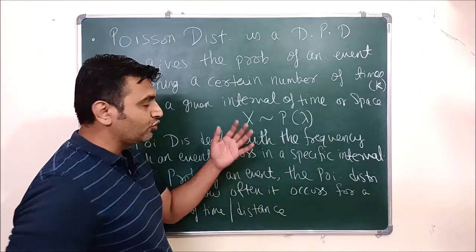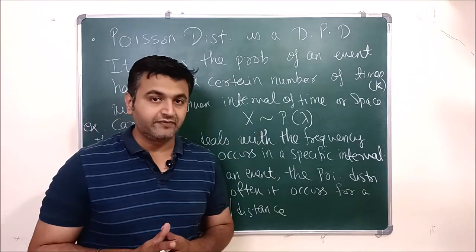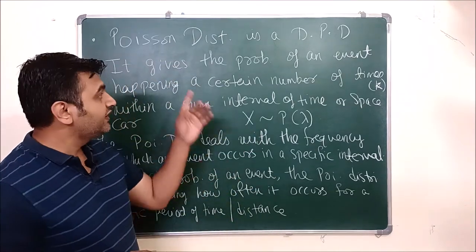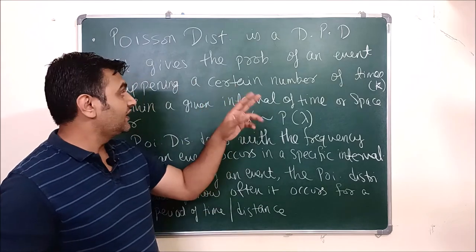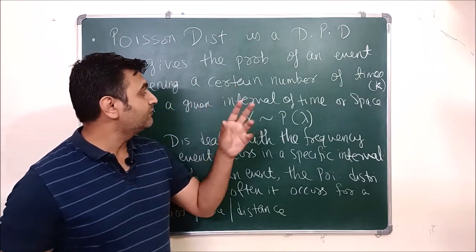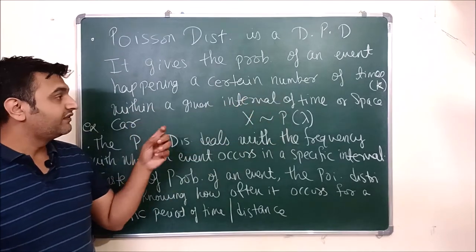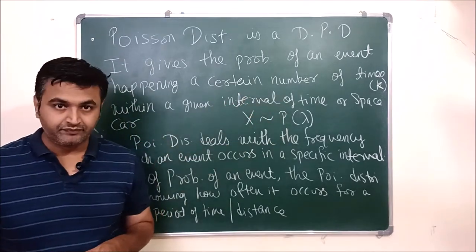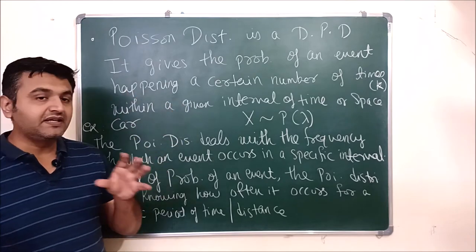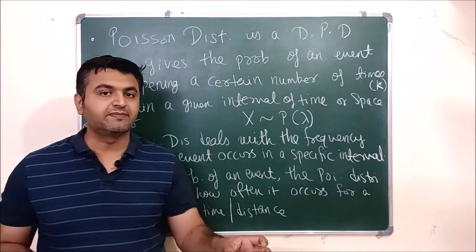When we say that X is following Poisson distribution, that means X is a discrete random variable. Poisson distribution gives you the probability of an event happening a certain number of times — say K number of times — within a given interval of time or space.